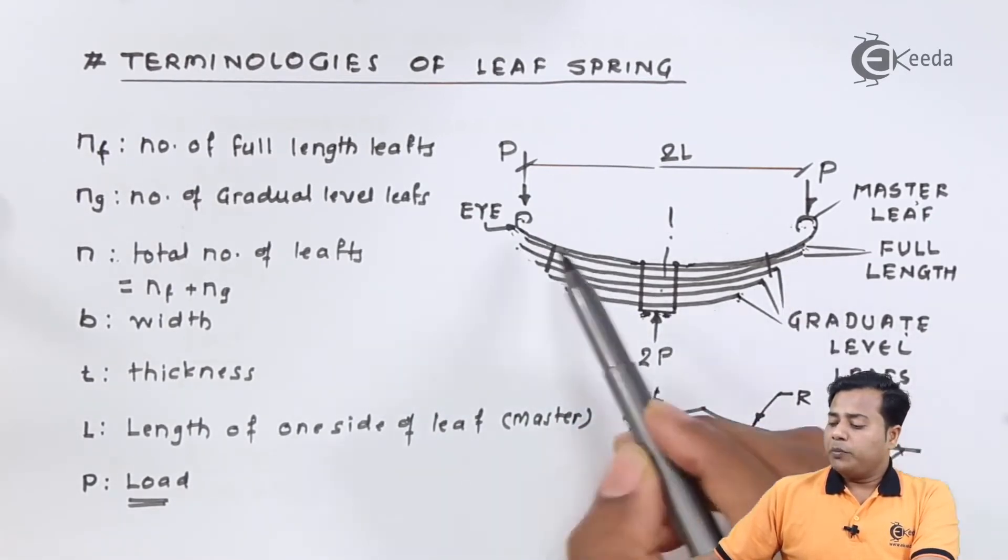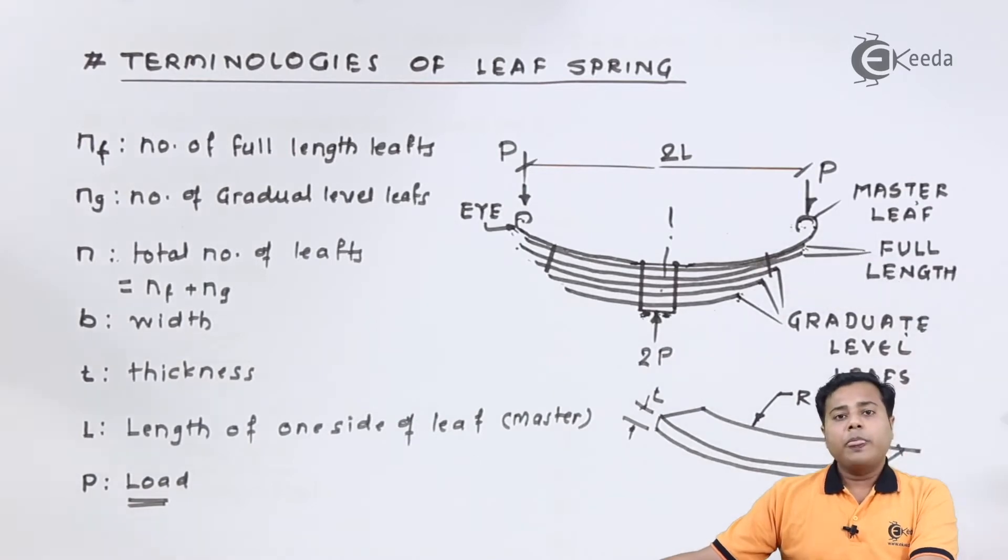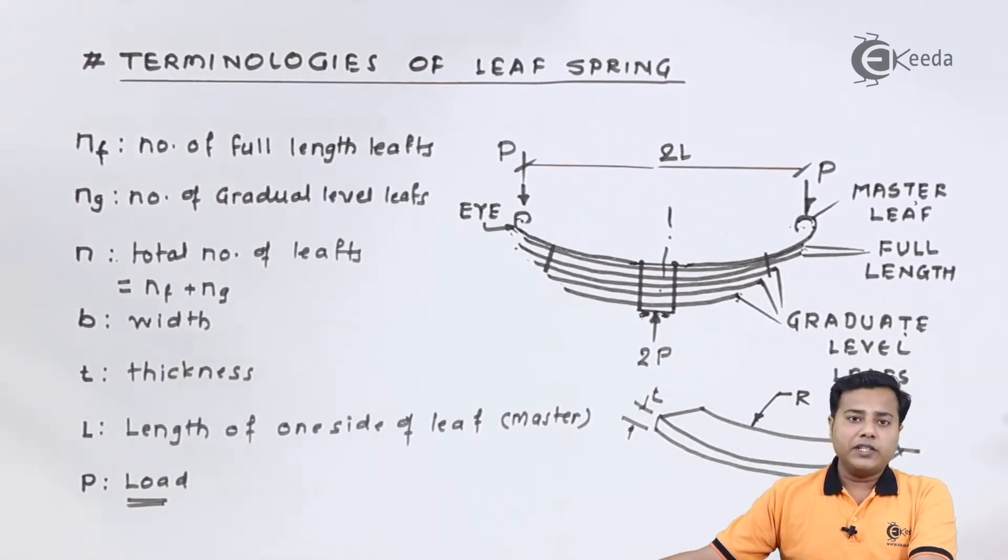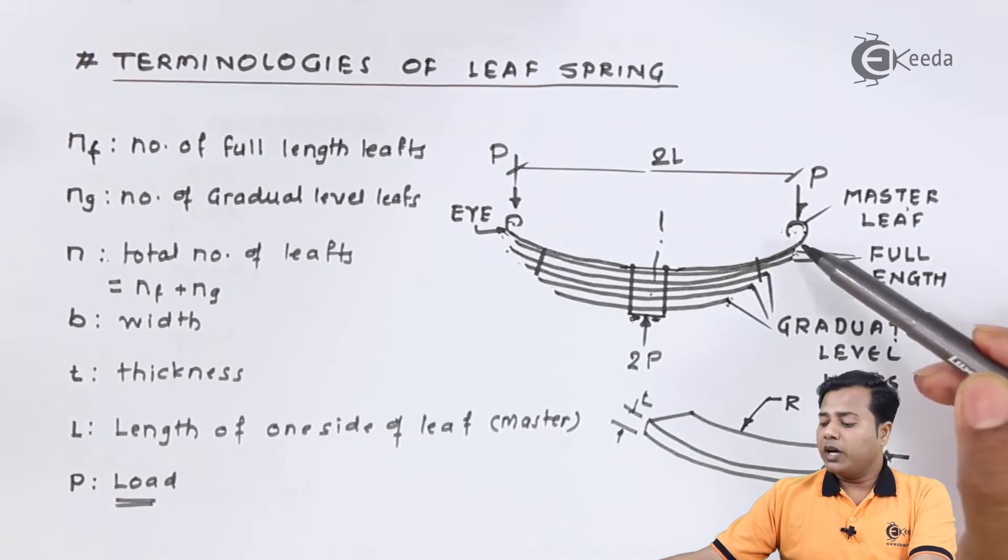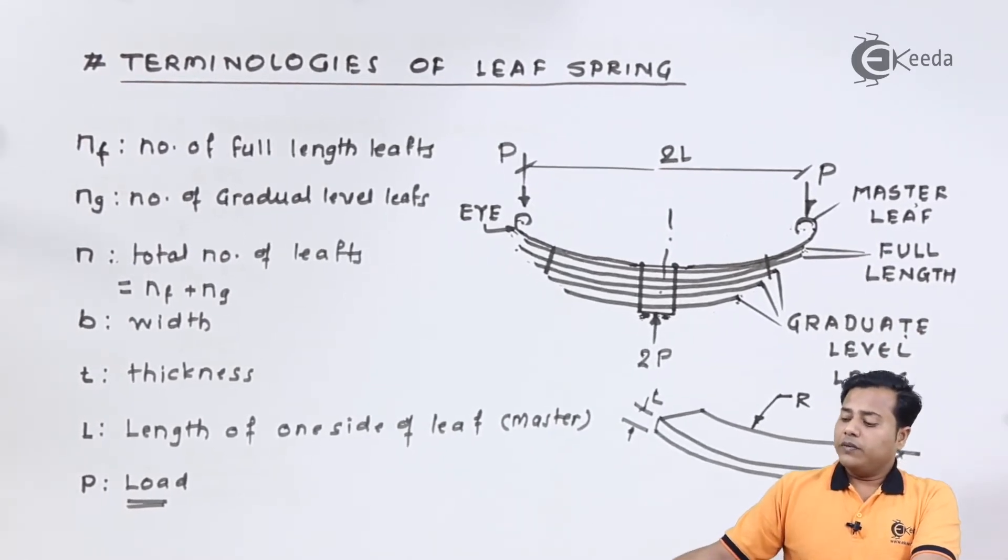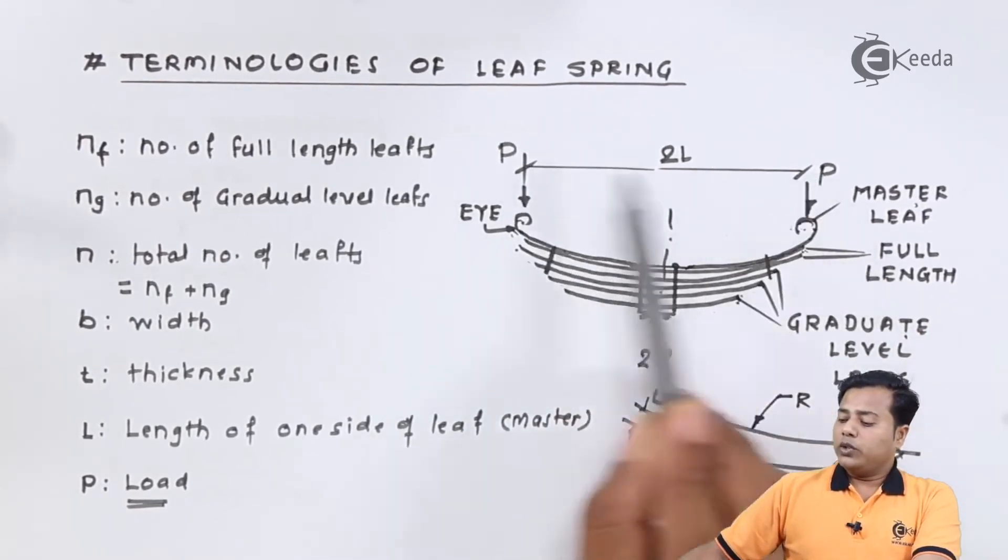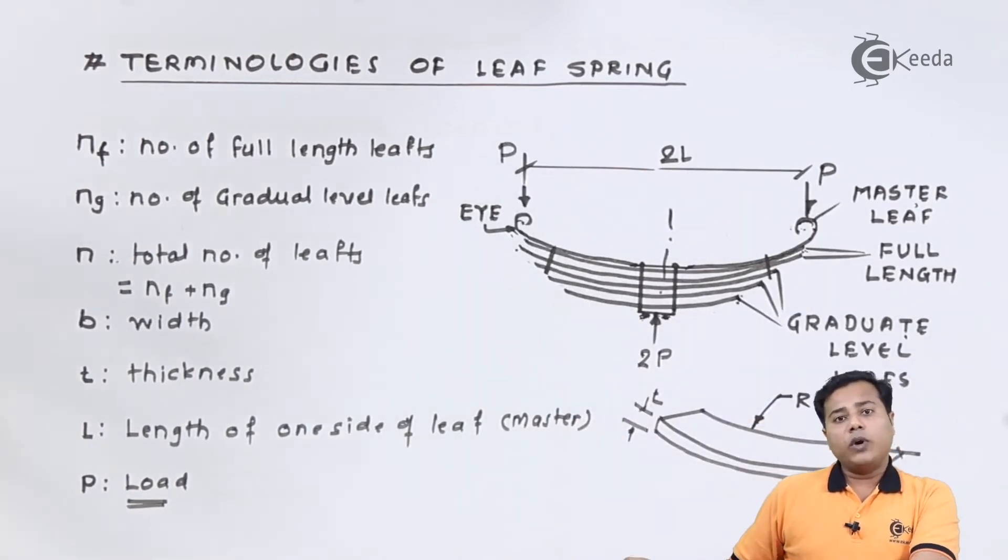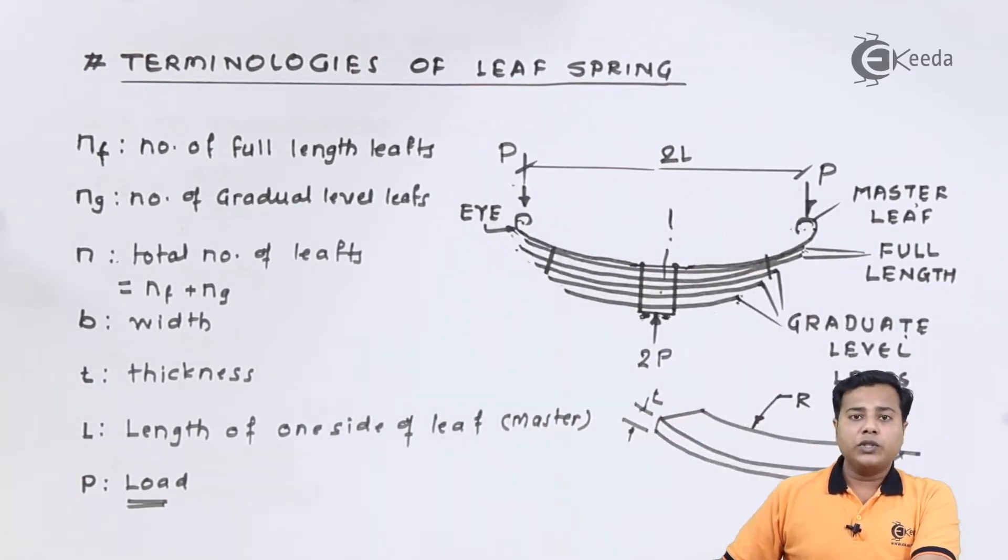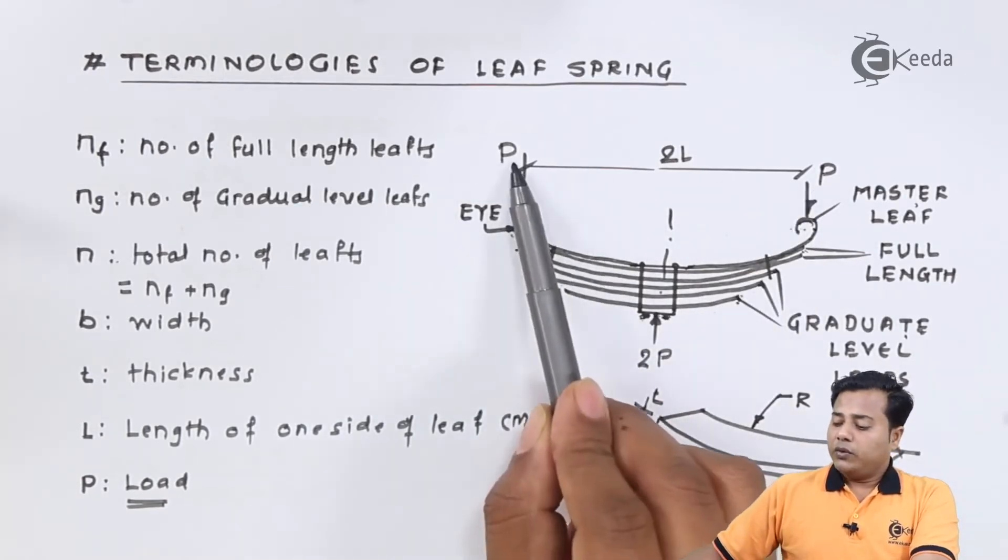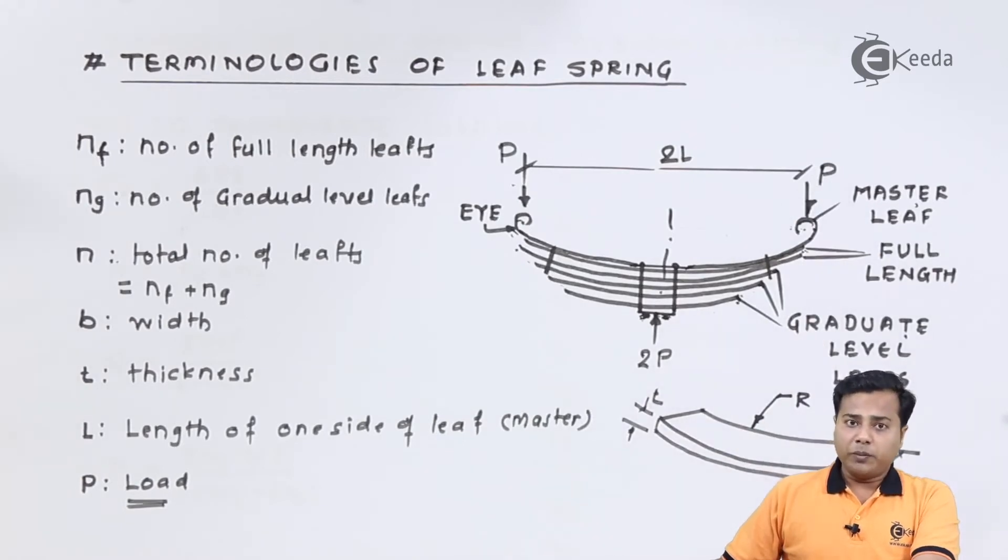Now when these eyes come into picture, the eyes are actually bolted together with the application, for example vehicle or automobile where these leaf springs are used. So the body of the vehicle will be bolted with this particular eye with the given leaf spring. Further, the total force acting on that particular one leaf spring is divided, or it is assumed to be divided into two sections. So if the load is 100 Newton or 100 kilonewton, 50 kilonewton on either side will be applied accordingly.